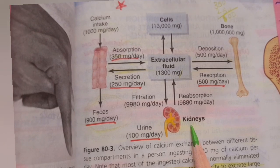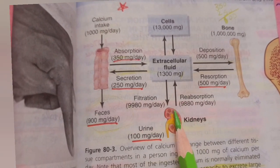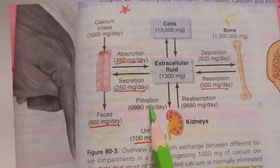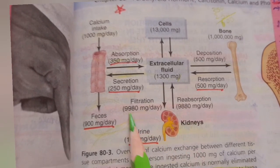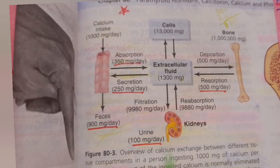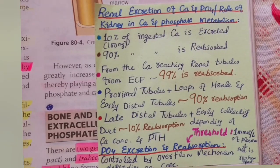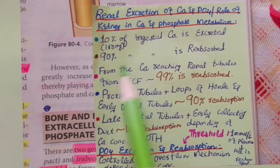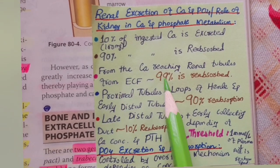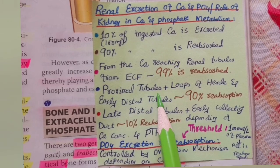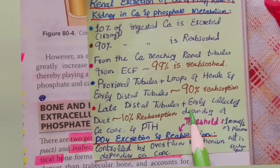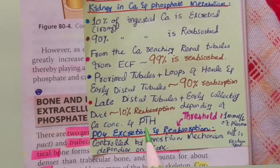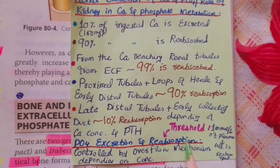For renal excretion of calcium: kidneys reabsorb about 90% of filtered calcium each day and excrete about 10% in urine — approximately 100 mg/day. Of calcium reaching the renal tubules, about 99% is reabsorbed. The proximal tubules, loop of Henle, and early distal tubules reabsorb about 90% of calcium, while late distal tubules and early collecting duct reabsorb about 10%, which is more variable and depends on calcium concentration and parathyroid hormone levels.